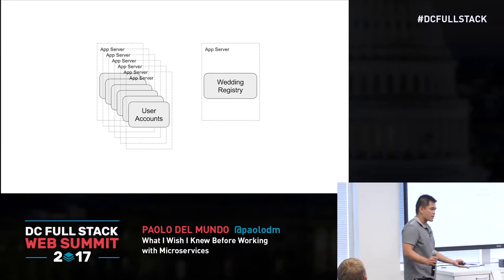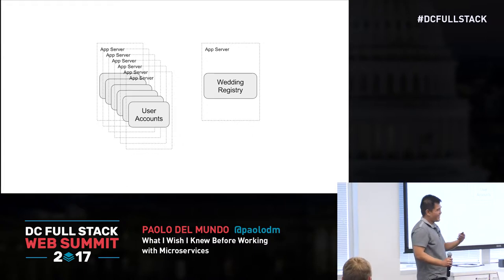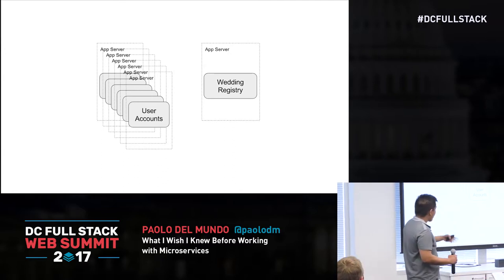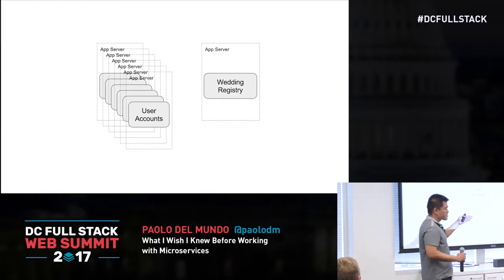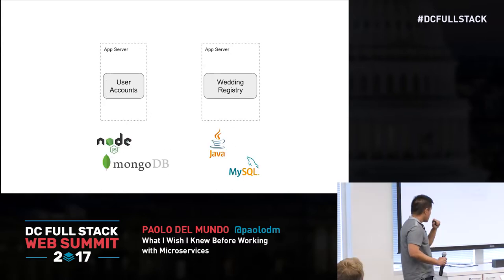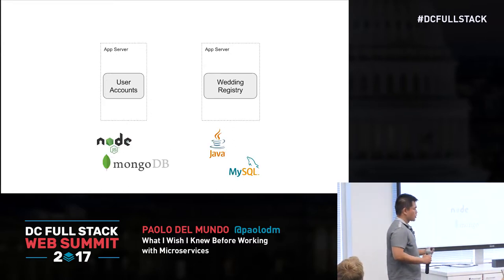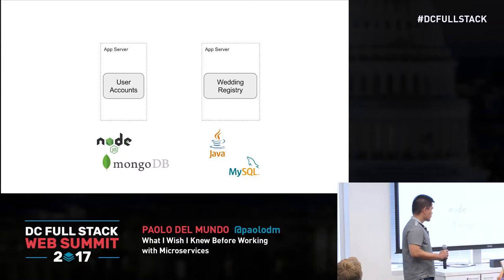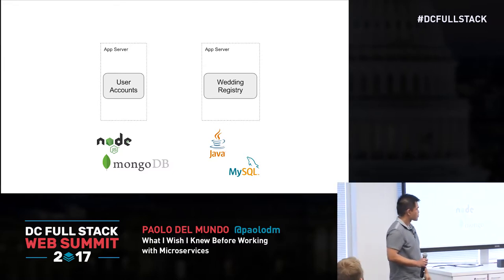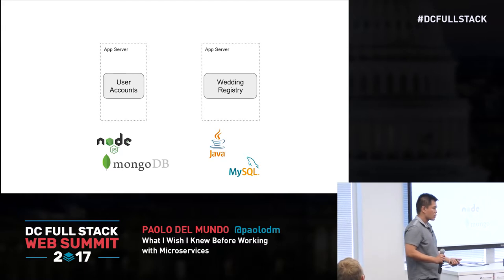Our wedding registry — nobody gets married in December, I think, except my brother by the way — so we'll just put it on one app server or just a few. We don't have to have the same scale. Scalability is definitely a big thing with microservices. The other big thing is being able to choose your own languages and technologies and frameworks.